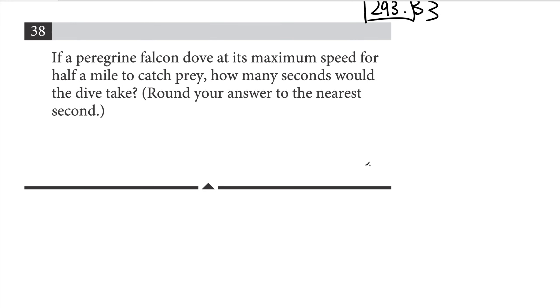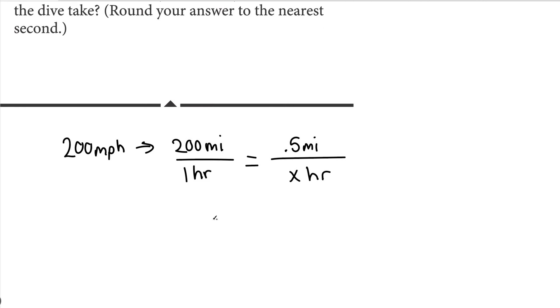If a peregrine falcon dove at its maximum speed for half a mile to catch prey, how many seconds would the dive take? We know that the peregrine falcon dives at 200 miles per hour. We can also write it like this: 200 miles every hour. And then we set up a proportion to figure out how many hours it would take to dive half a mile. So that'd be 0.5 miles, and the bottom hour is what we're trying to find out. So let's call that x.